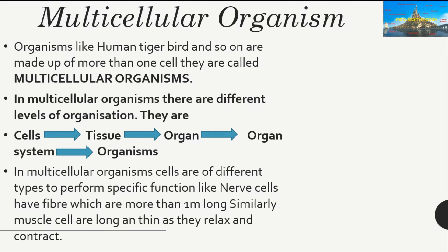In multicellular organisms, there are different levels of organization. It starts from a cell, which combines to form a tissue — like dermal tissue or vascular tissue in plants. A group of tissues combines to form an organ, like the stomach or intestine. A group of organs forms an organ system, like the digestive system. Different organ systems — circulatory, nervous, digestive, respiratory — together form an organism.